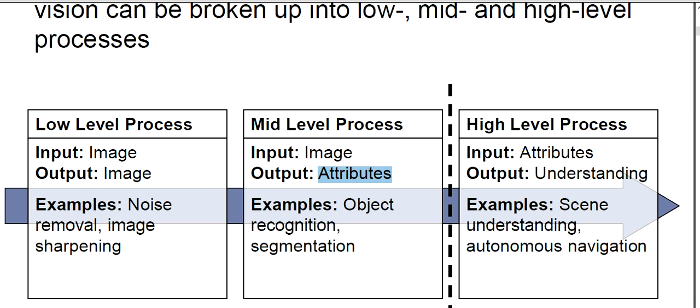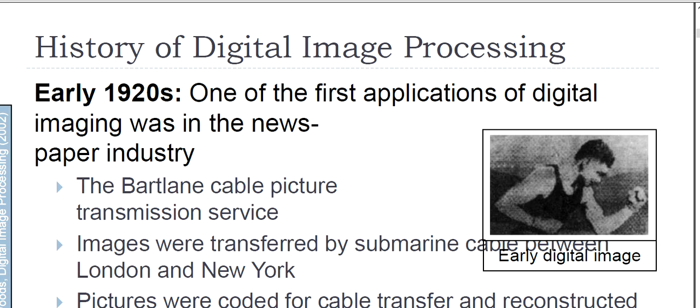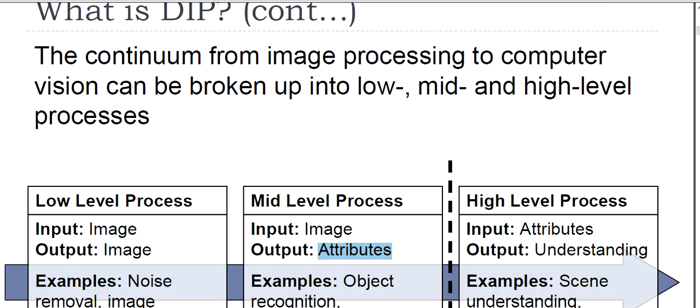In mid level processing you see applications in object recognition and segmentation, where we bring out the objects of the image as output — focusing on attributes. In the high level process, the input is those attributes found in mid level processing and the output is understanding — for example, scene understanding and autonomous navigation. That is the journey from image processing to computer vision.